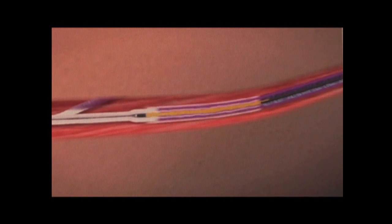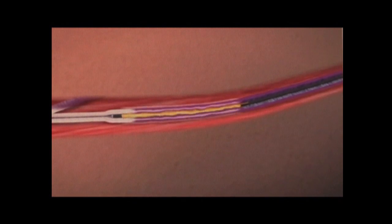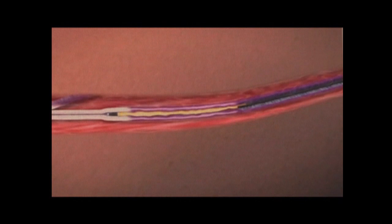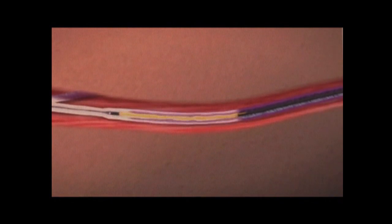The patient feels no pain during this procedure since there has been tumescent anesthesia infiltrated around the vein to protect the surrounding tissues from the heat of the catheter. The entire closure of the vein takes approximately 4 minutes, in an average length greater saphenous vein.